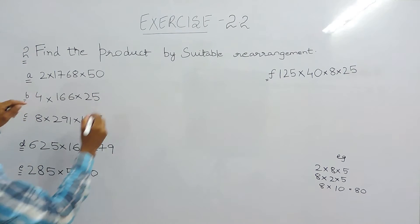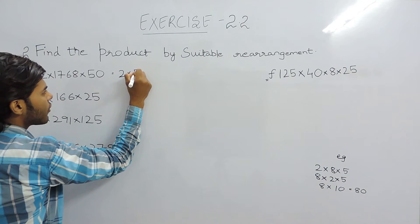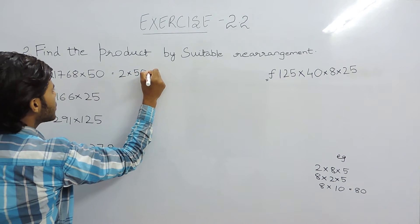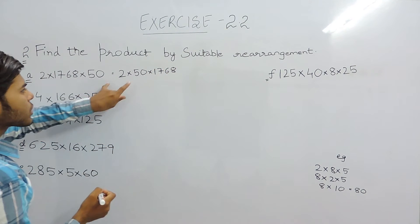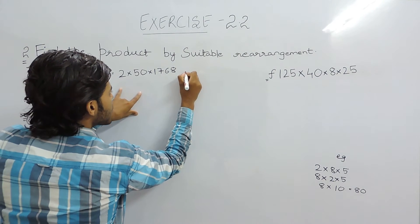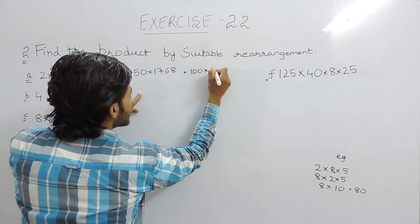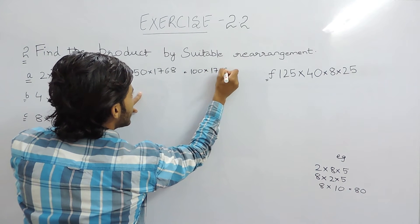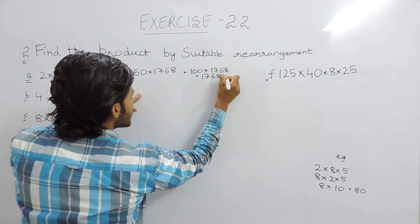So in the first part we should write it like 2 into 50 into 1768. So this will be 100. So the answer will be 100 into 1768 which will be 176800.